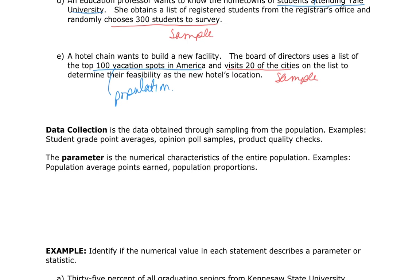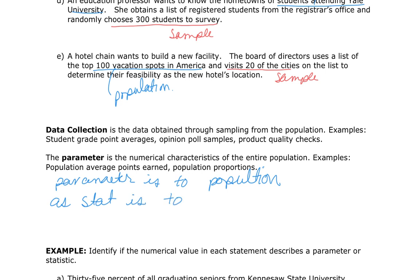Data collection is the information we get through sampling of the population — student grade point averages, opinion polls, quality checks, or where students are from. A parameter is a numerical characteristic of the entire population, such as the population average grade points or population proportions. The relationship is: parameter is to population as statistic is to sample. We get a sample, get a statistic about that sample, apply it to the population, and that becomes a parameter.